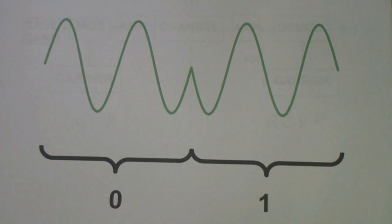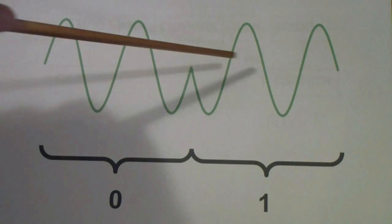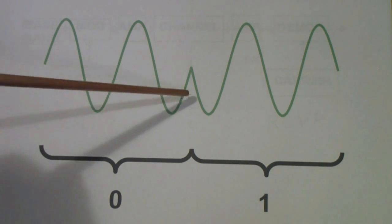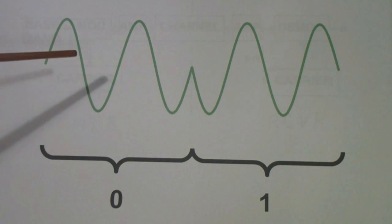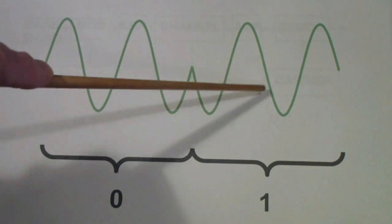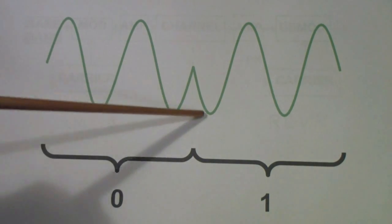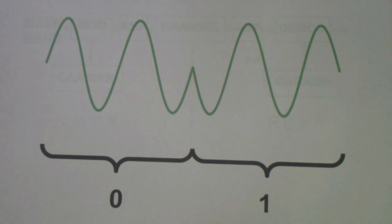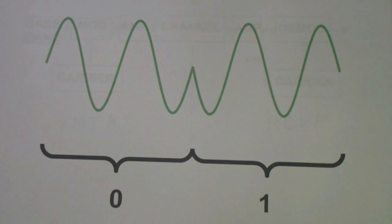Phase shift keying is the shifting of the phase of a constant-frequency carrier. Notice that the frequency of the carrier before and after the phase change is the same—the only difference is the phase has changed. We have reversed the phase at the point when the signal went from a zero to a one. Phase shift keying has been known for quite some time, but only with the advent of modern analog-to-digital converters and digital processing circuits running at high enough speeds has it become a prevalent means of modulation.